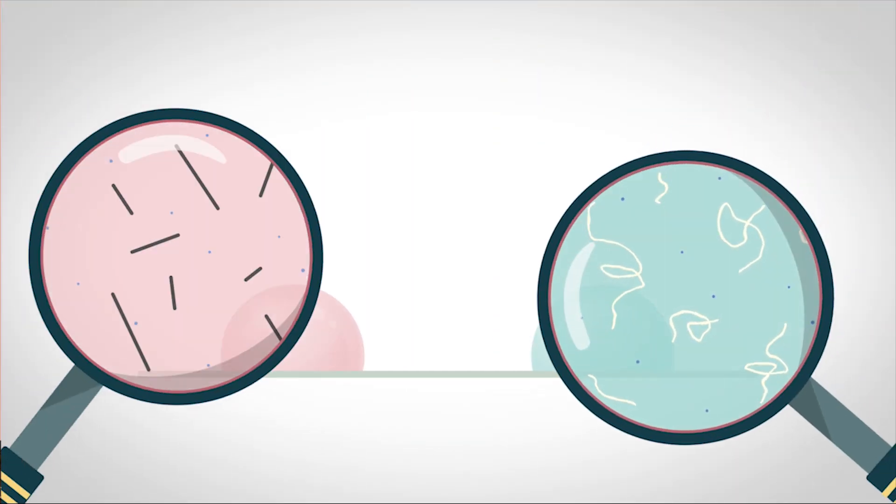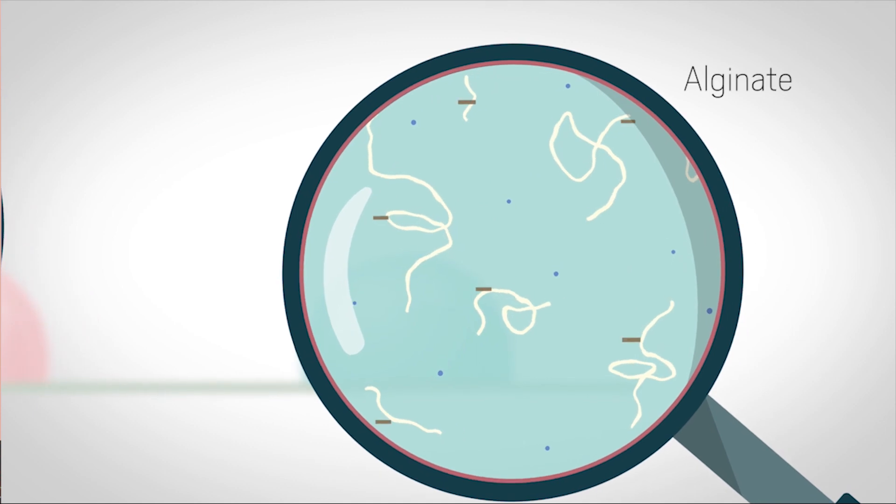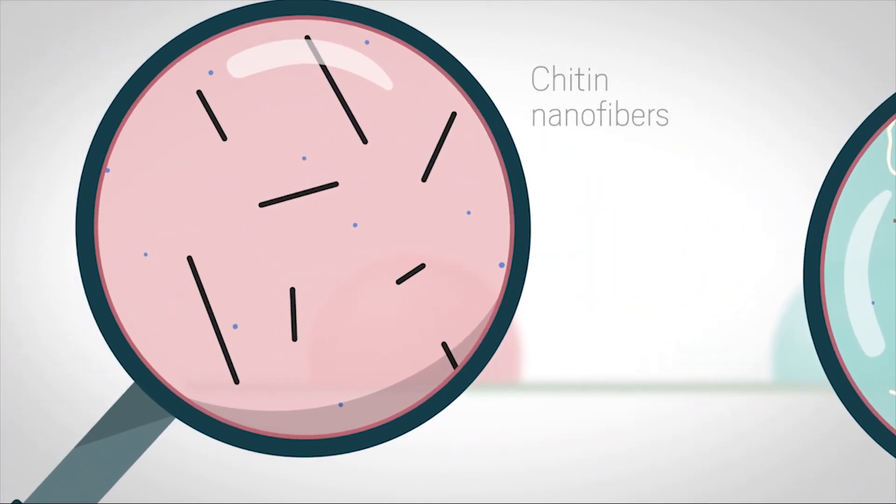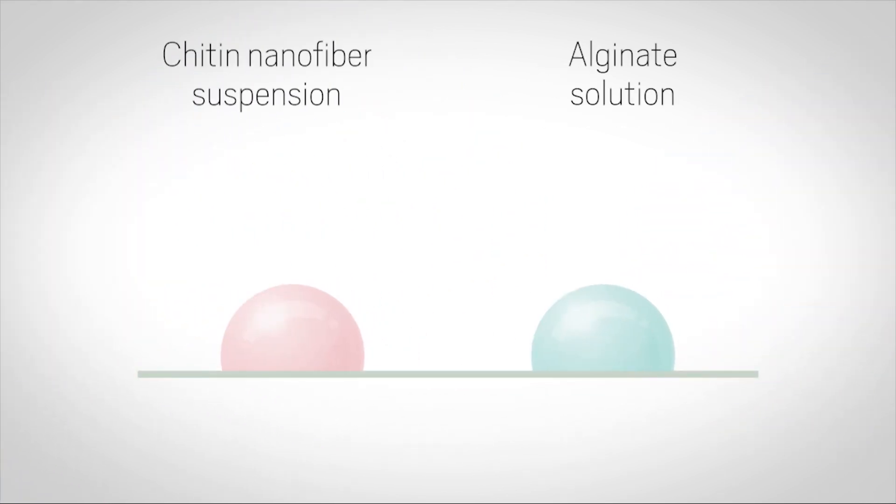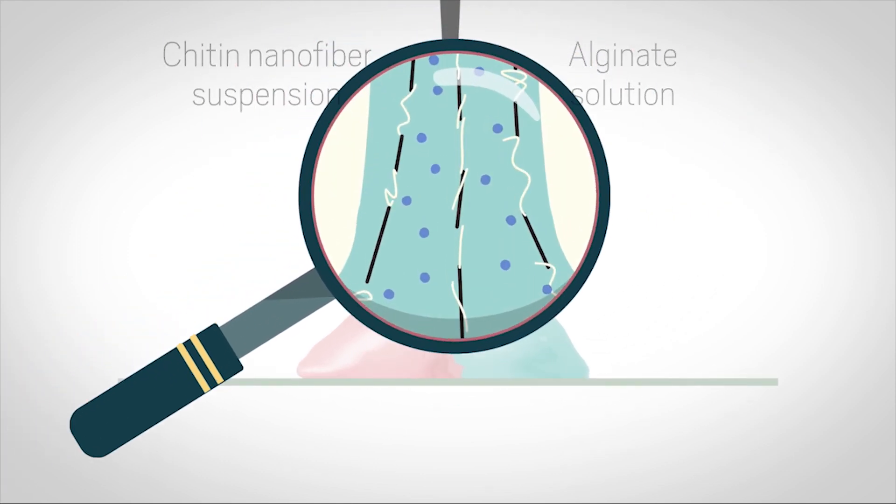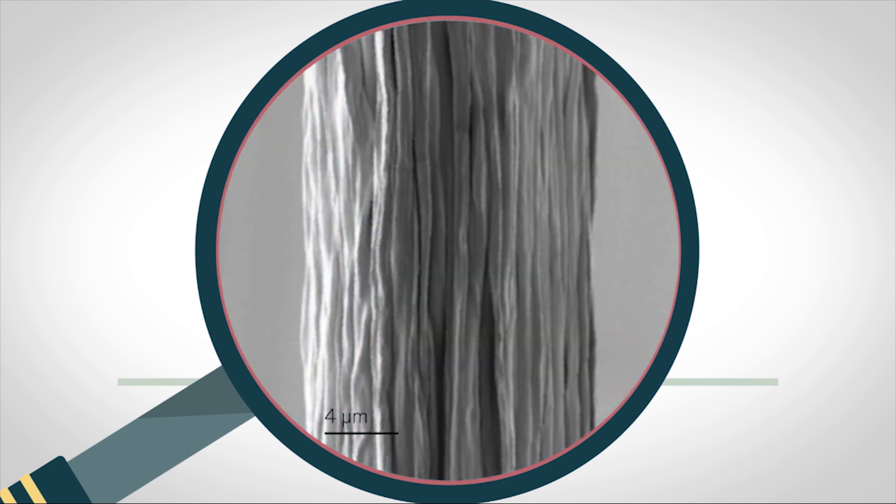When the researchers designed this material, they knew that the negatively charged alginate would be attracted to chitin nanofibers, which they had modified to have a positive charge. They found that when a solution of alginate contacts a suspension of chitin nanofibers, the alginate wraps around the nanofibers, forming fibrils that align in parallel as the thread is drawn upward.